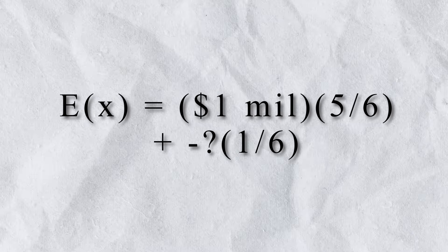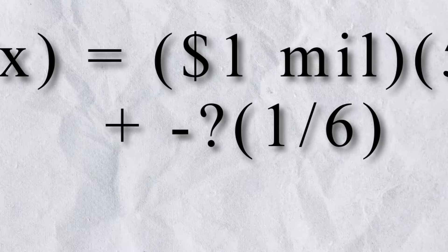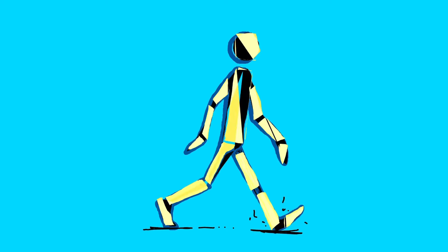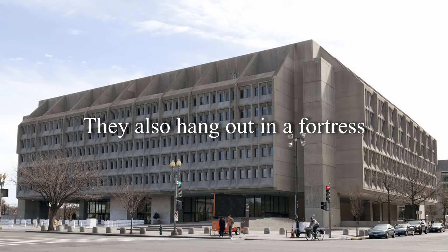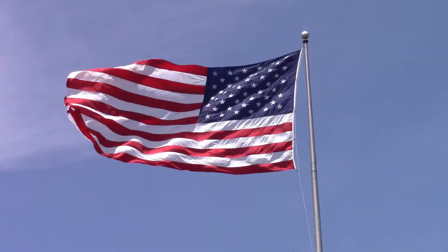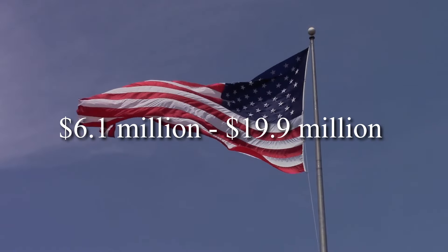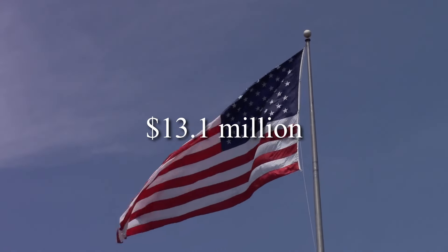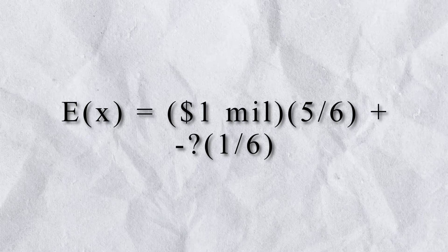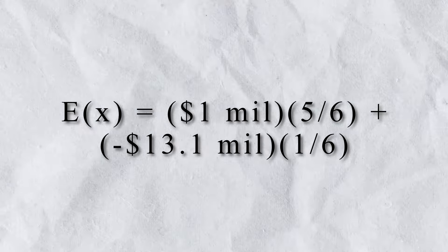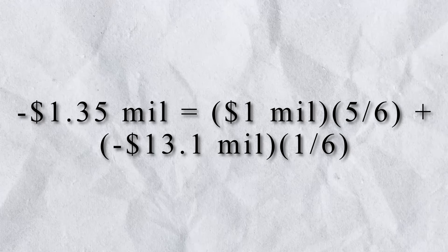Let's return to our game of Russian Roulette. Initially, we sought to find a value for x2, the value of human life, to calculate the expected value of playing the game. And while we can't determine the value of a life, we can find the value of a statistical life. Fortunately, the US Department of Health and Human Services has taken the liberty for us, estimating the value of a statistical life for an American in 2024 to range between $6.1 million to $19.9 million, with a central estimate at around $13.1 million. So let's assume that we're boring and average. If we were to plug in this value into our equation, we would find that, on average, playing the game is not worthwhile. The expected value is not only negative, but also significant, at approximately negative $1.35 million.